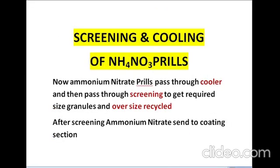Screening and cooling of ammonium nitrate prills: After obtaining the prills from the prilling tower, we pass them through coolers, as the prills have a temperature of around 60 to 70°C. After cooling, we pass them through screens to obtain the required size granules. Oversized granules are recycled. After screening, the ammonium nitrate is sent to the coating section.